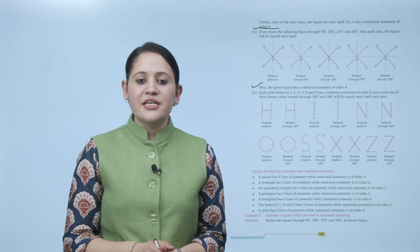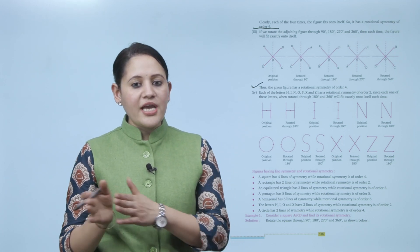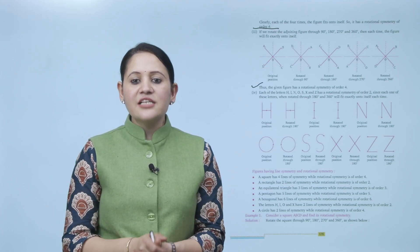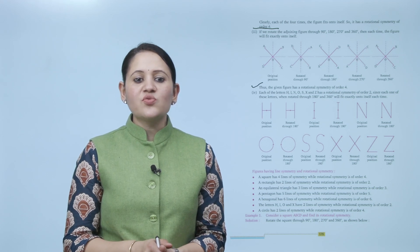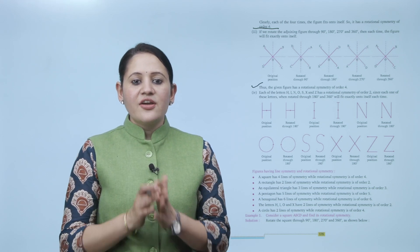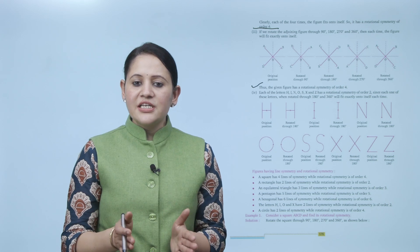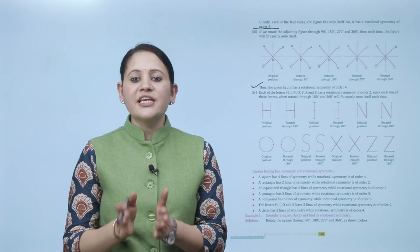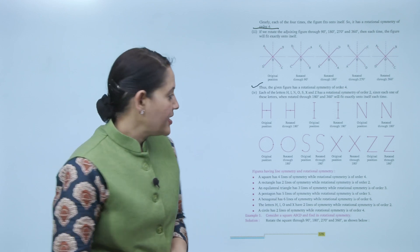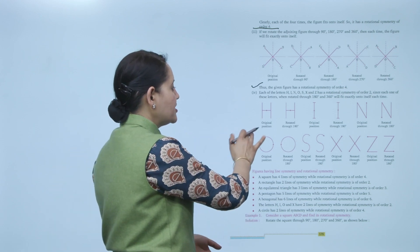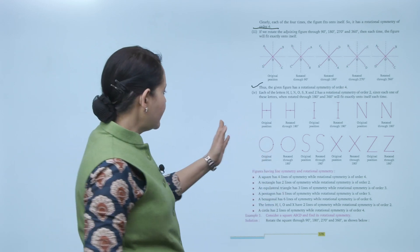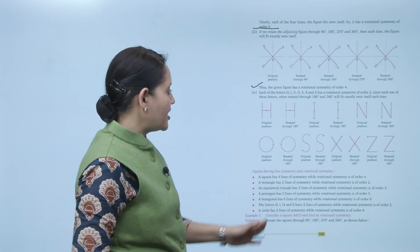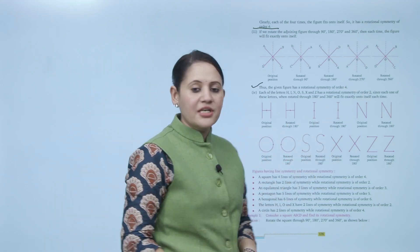Each of the letters H, I, N, O, S, X, and Z has the rotational symmetry of order 2, since each one of these letters when rotated through 180 degrees and 360 degrees will fit exactly onto itself each time. For example, H looks the same in its original position and after rotation of 180 degrees. Similarly for I and other letters in the set.